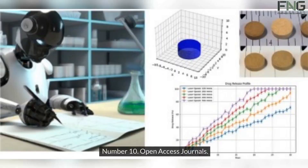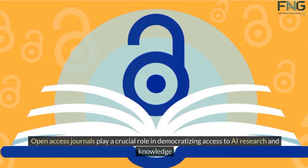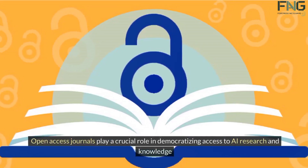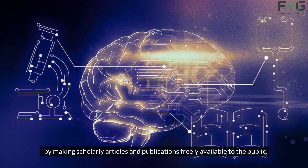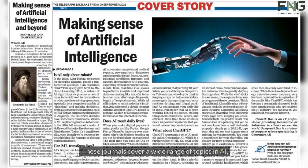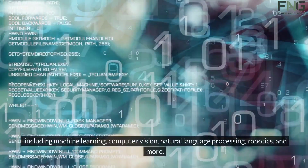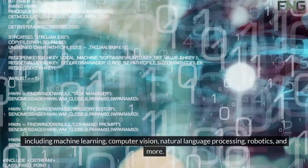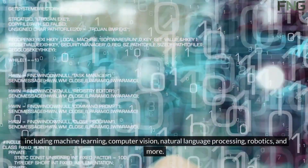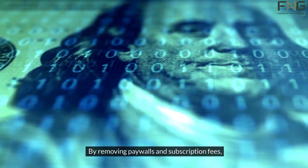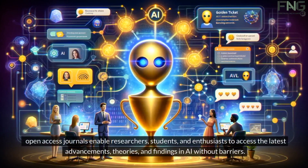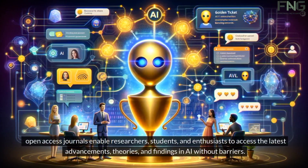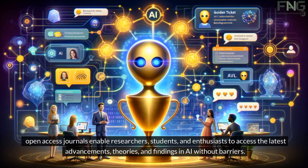Number ten: open access journals. Open access journals play a crucial role in democratizing access to AI research and knowledge by making scholarly articles and publications freely available to the public. These journals cover a wide range of topics in AI, including machine learning, computer vision, natural language processing, robotics, and more. By removing paywalls and subscription fees, open access journals enable researchers, students, and enthusiasts to access the latest advancements, theories, and findings in AI without barriers.